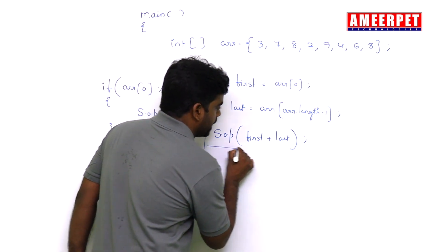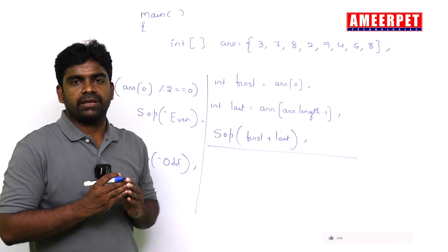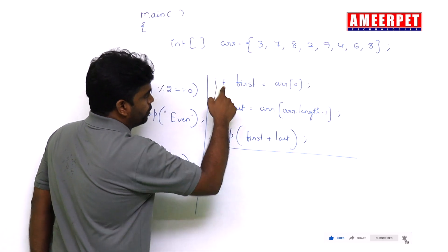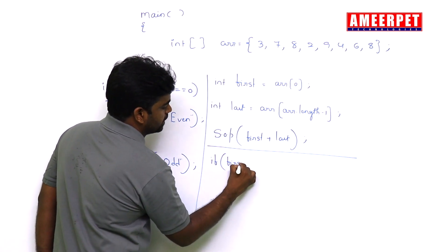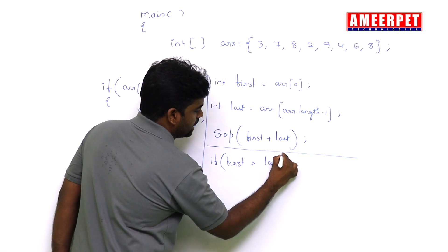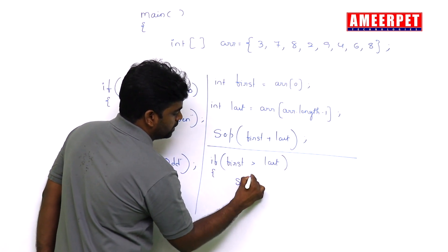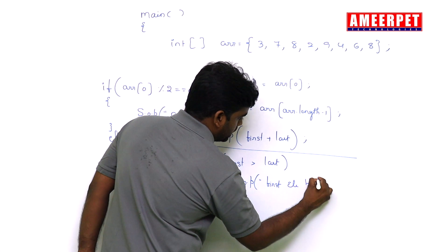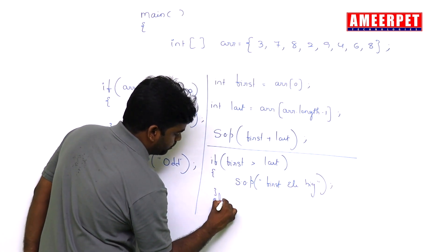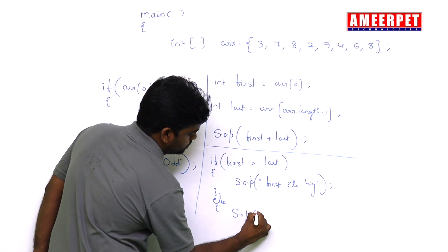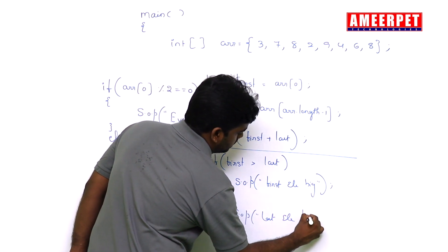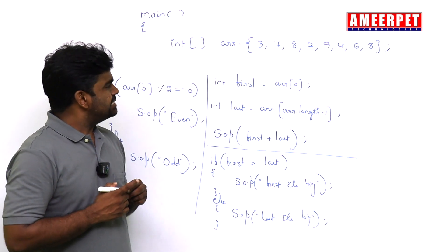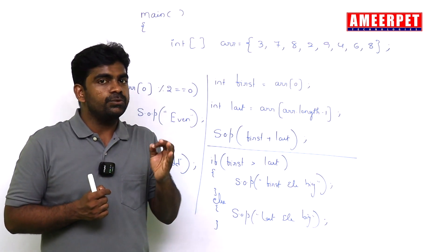Next, among the first and last elements of the array, which one is bigger? If first > last, print 'first element is big'; else print 'last element is big'. If there is an equal chance, you handle that with else-if. These are simple questions working with individual elements in the array.